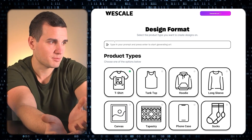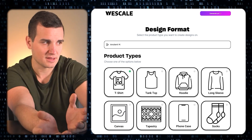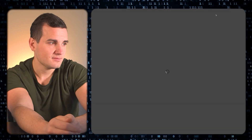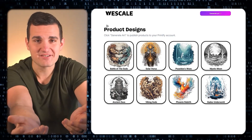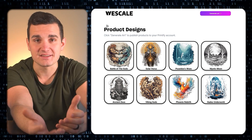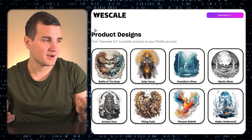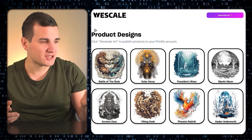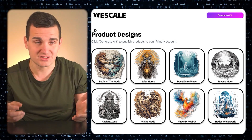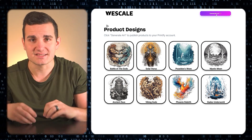I'm just going to type in a prompt — a design that I want — like "ancient mythology" and then hit generate art. Now what it's done in a matter of seconds is created AI-generated designs that are perfect for print-on-demand products. Some of these are amazing. It just came up with these, and it even came up with names for the products too. It's able to do all of that in a matter of seconds.